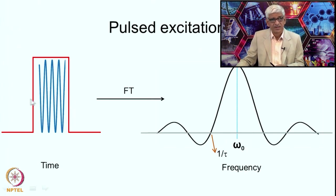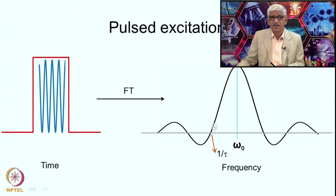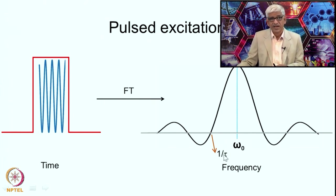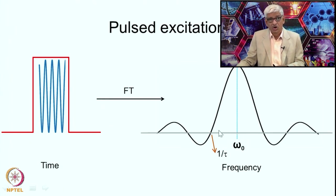By applying the RF for a short period of time you have generated a large number of other frequencies. The excitation comes to zero at 1/tau. So if tau is 1 microsecond, then 1/tau is 10^6, meaning a 1 MHz range is covered. That is the kind of excitation you have, although different frequencies have different amplitudes.